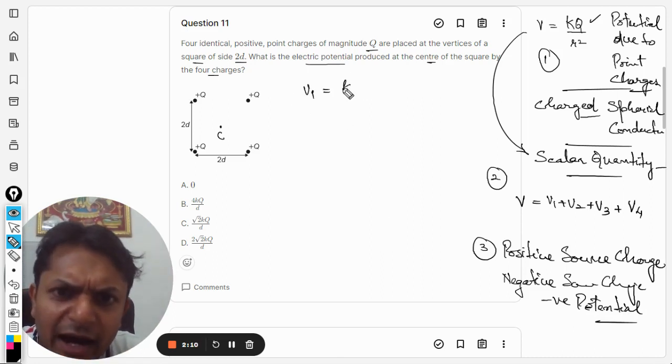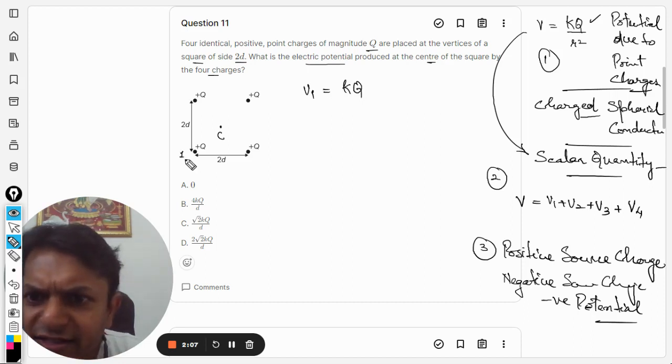So v1 will be given by kQ. Let us say this is the charge number one, this is charge number two, three, four. So this will be given by kQ by r, where this distance is taken as r and the source charge is capital Q as given in the question.